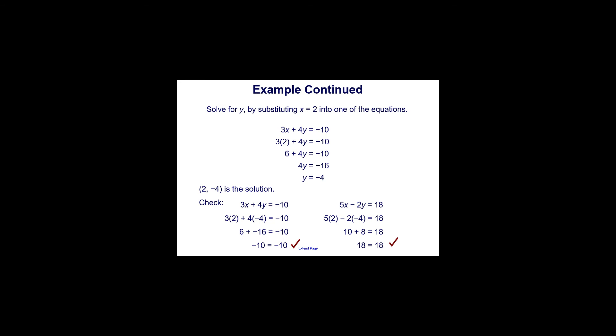Now we can continue with elimination by solving for y using the value x equals 2, substituting into one of the equations. We'll pick the equation 3x plus 4y equals negative 10. Substituting in x equals 2, so 3 times 2 is 6. Subtracting 6 from both sides gives 4y equals negative 16. Dividing both sides by 4, we get y equals negative 4.